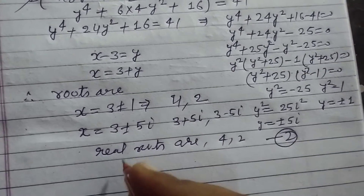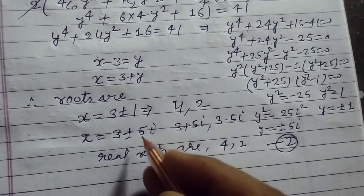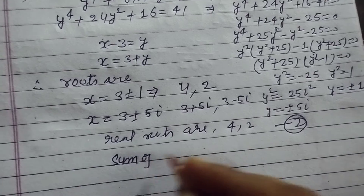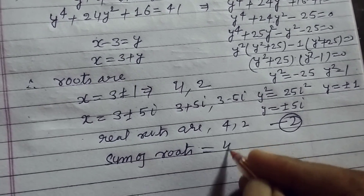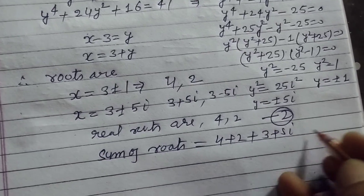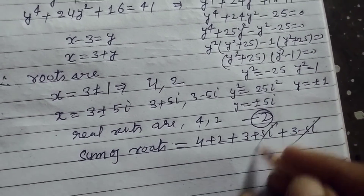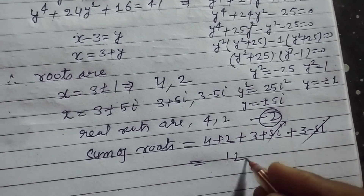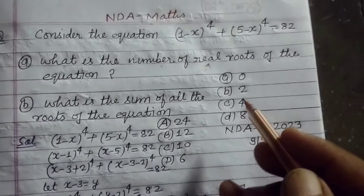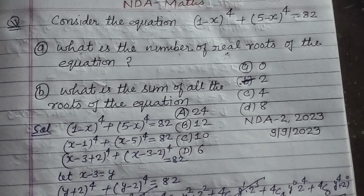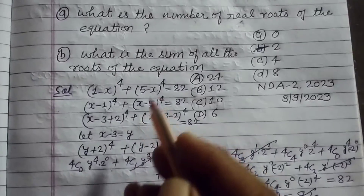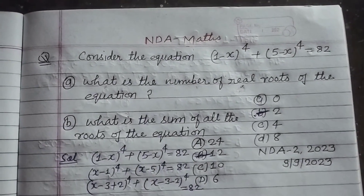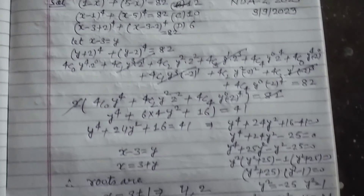Total roots are 4. Sum of all roots equals 4 plus 2 plus (3 plus 5i) plus (3 minus 5i). The imaginary parts cancel, giving 4 plus 2 plus 3 plus 3 equal to 12. So the answer to the first question is 2 real roots, and the sum of all roots is 12. I hope you got it — please like the video, subscribe to the channel, thanks for watching.